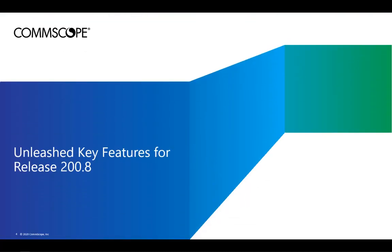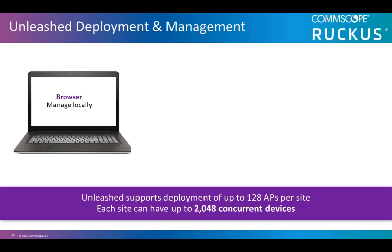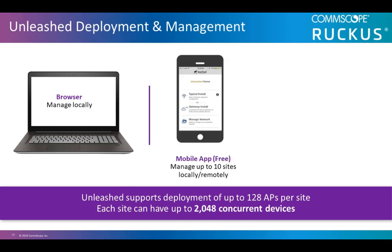Let's look at what's new for Unleashed Release 200.8. Unleashed is an easy-to-deploy and manage solution with an intuitive user interface across all management options. A Ruckus Unleashed network can be managed through two options: through a standard web browser with a laptop connected to the local Wi-Fi network, or via a free mobile app for Apple and Android users. Up to 10 different Unleashed networks can be managed from the mobile app. With the built-in social login features, administrators can link the Unleashed Wi-Fi network to their Gmail, Facebook, or Twitter account, and manage their network from anywhere in the world.